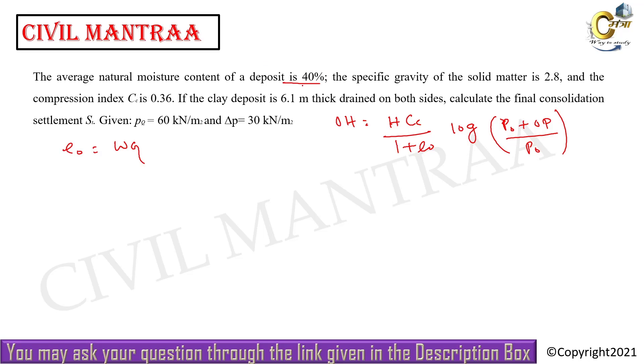e0 is equal to g, that is, this is your w moisture content, w specific gravity, this is your g. So now w and g, 0.4 into 2.8, so the value is 1.12.